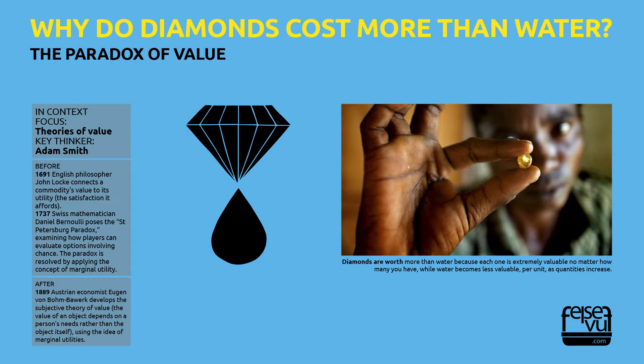If he loses a bag of wheat, he will merely stop feeding the birds. Even though the farmer needs wheat to feed himself, the price he is willing to pay to replace the fifth bag of wheat is low, because it only generates a small amount of pleasure — feeding birds. Water is abundant, but diamonds are scarce. One extra diamond has a high marginal utility and so commands a much higher price than an extra cup of water.